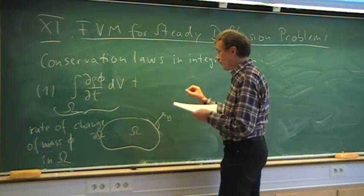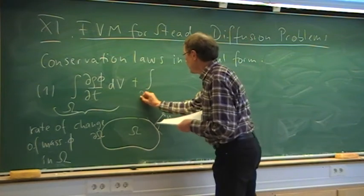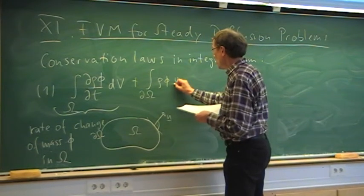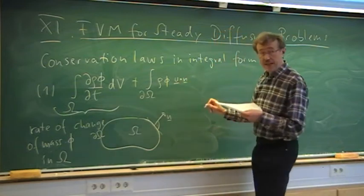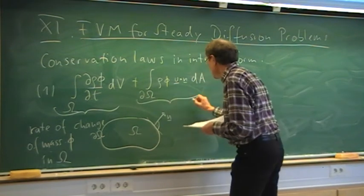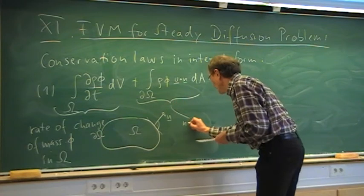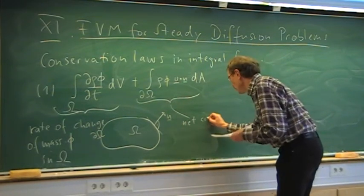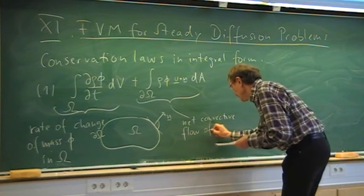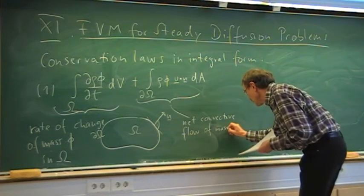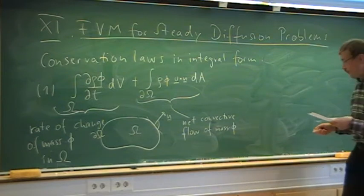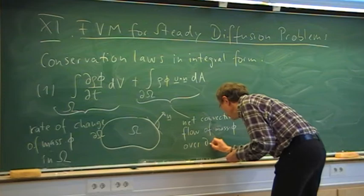We have some convective flux over the boundary of the control volume, expressed as rho times phi times the normal velocity component u·n — that is the normal velocity component — as a surface integral. This quantity is the net convective flow of the quantity we are considering, which is mass times phi. For phi equal to 1, it would be the convective flow of mass — the mass flow — over the boundary d-omega.